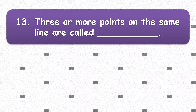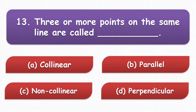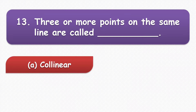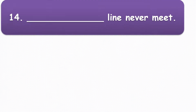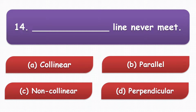Next question: points that lie on the same line are called blank. The options are collinear, parallel, non-collinear, or perpendicular. The answer is collinear.